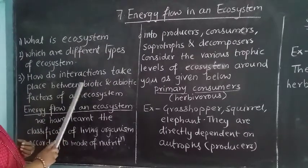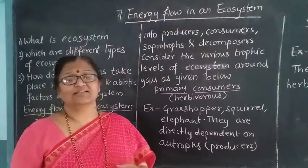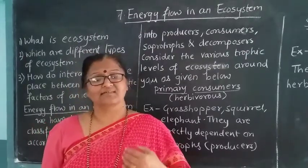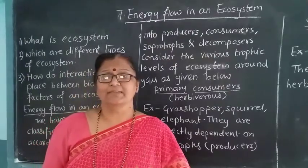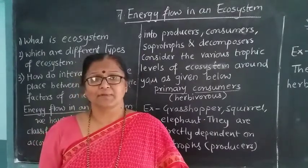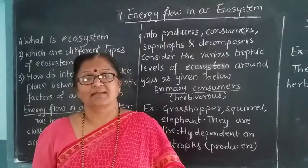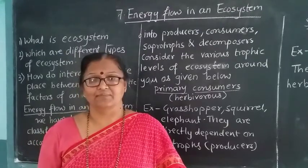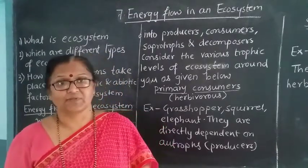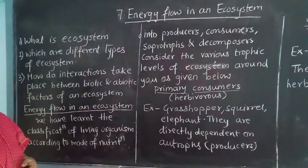How do interactions take place between biotic and abiotic factors of an ecosystem? Biotic factors are those which have life in them — for example, plants and animals. Abiotic factors are factors which do not have life in them — for example, water, air. Any part of an ecosystem which does not contain life is called an abiotic system.